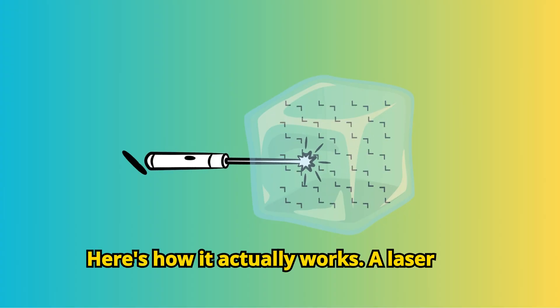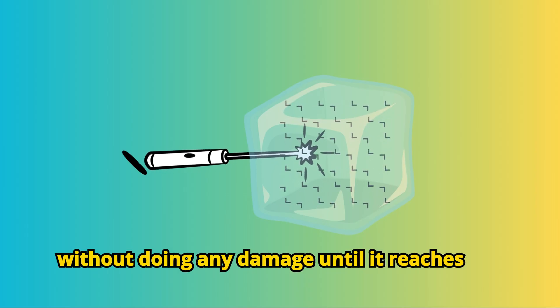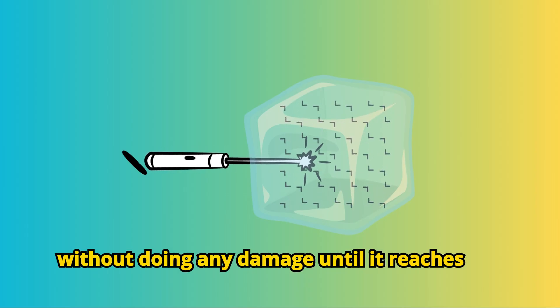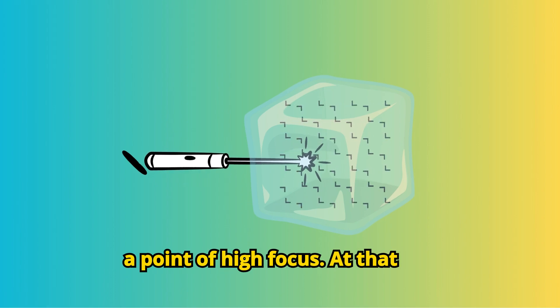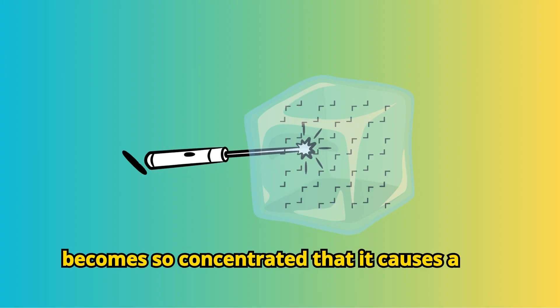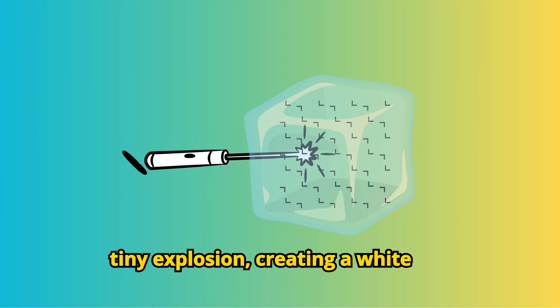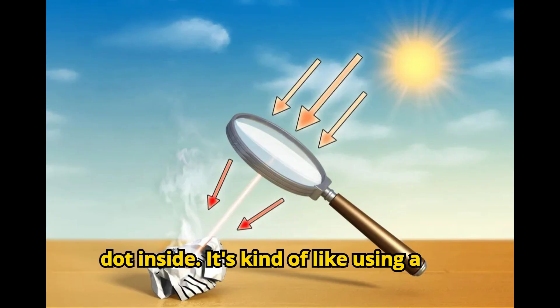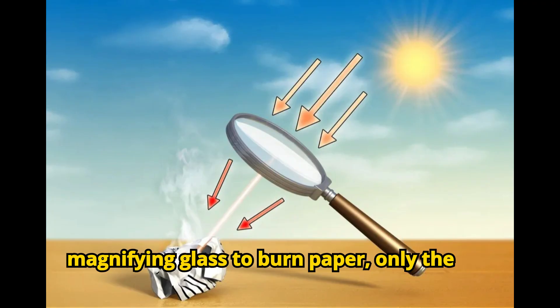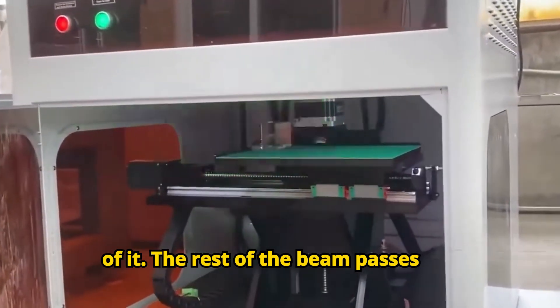Here's how it actually works. A laser beam passes straight through the glass without doing any damage, until it reaches a point of high focus. At that exact focal point, the laser's energy becomes so concentrated that it causes a tiny explosion, creating a white dot inside. It's kind of like using a magnifying glass to burn paper, only the burn happens inside the glass, not on top of it.